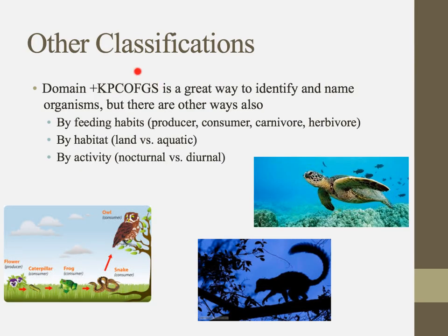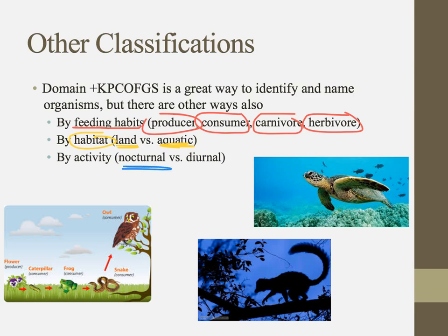Organizing things into different taxa is great for identifying and naming things, but there are other ways of classifying organisms too. We could classify them by feeding habits — producers like algae, consumers like sea turtles, carnivores like owls, or herbivores like caterpillars. We could classify them by habitat: terrestrial or aquatic. We can even classify them by activity: nocturnal (active at night) or diurnal (active during the day). Keep in mind that this way of classifying things is useful but not the only way.